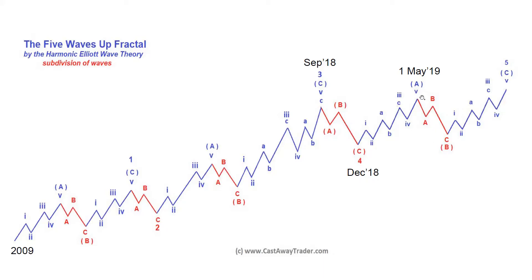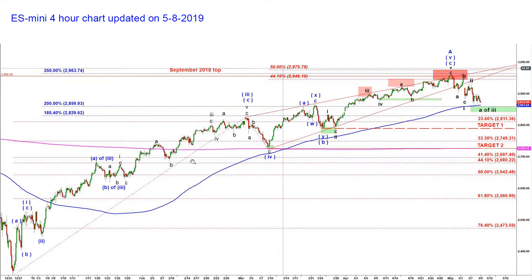Now let's talk about that wave A. Wave (A) up is normally subdivided into five waves, so it has an impulsive structure. We also know that that wave loves to top retesting the previous top made by wave three. And this is exactly what happened this time. We topped on May 1st, 2019 at the very same level where the market topped in September 2018. This is a microstructure — because we knew that wave A of five would be subdivided into five waves, we could micro-count those five waves from the low made in December 2018: A, B, C of one.